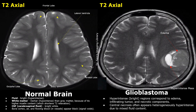This mass is heterogeneous, with these brighter areas having more cystic necrotic components and these less bright regions having more solid components. Edema is also noted here.